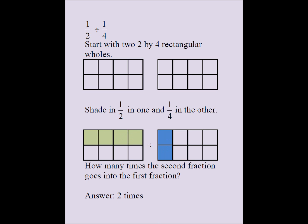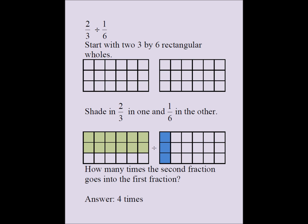Let's look at one more example: how many times does 1 sixth go into 2 thirds? I'll take a 3 by 6 rectangle for my whole, based on the two denominators. I shade in 2 thirds — 1 third, and another 1 third. I also shade 1 sixth of a similar whole. Now I'm asking how many times 1 sixth, the divisor, goes into 2 thirds, the dividend. The answer is once, twice, three times, four times. The answer is 4.